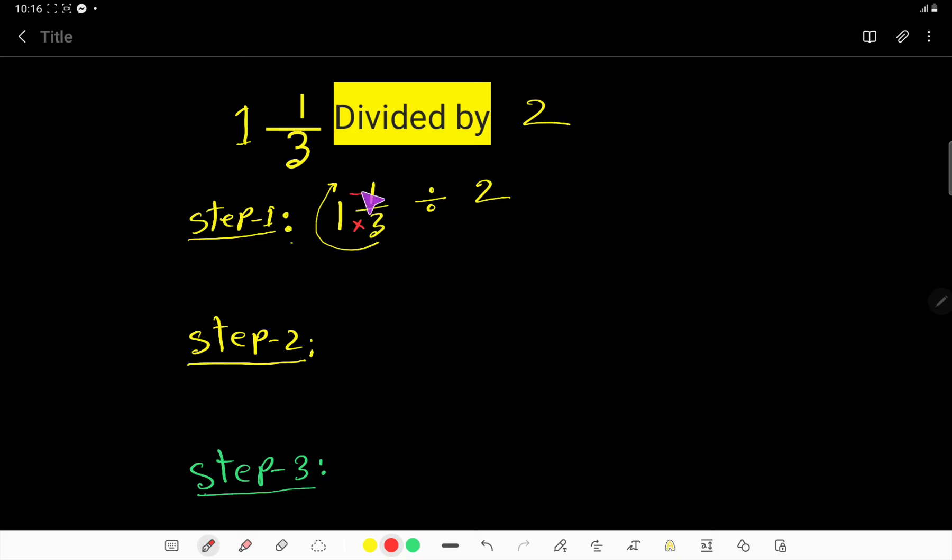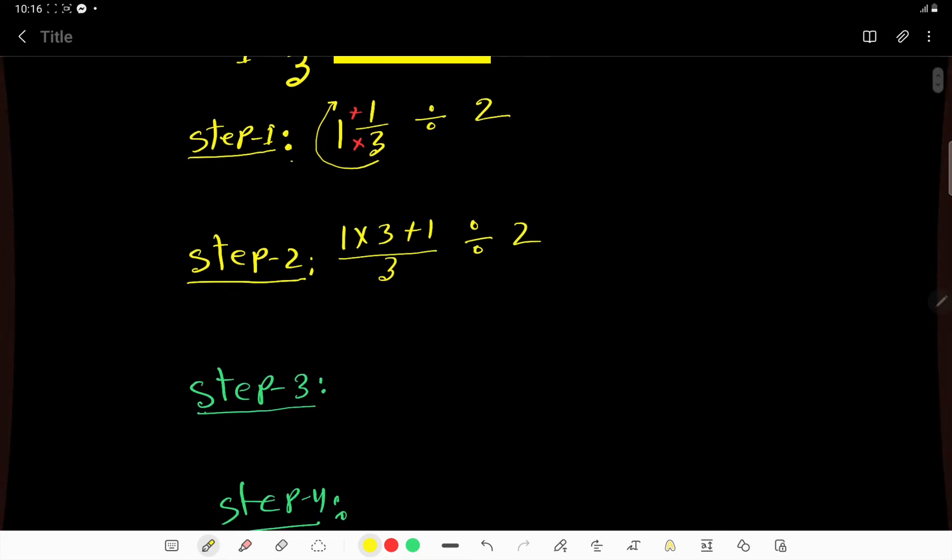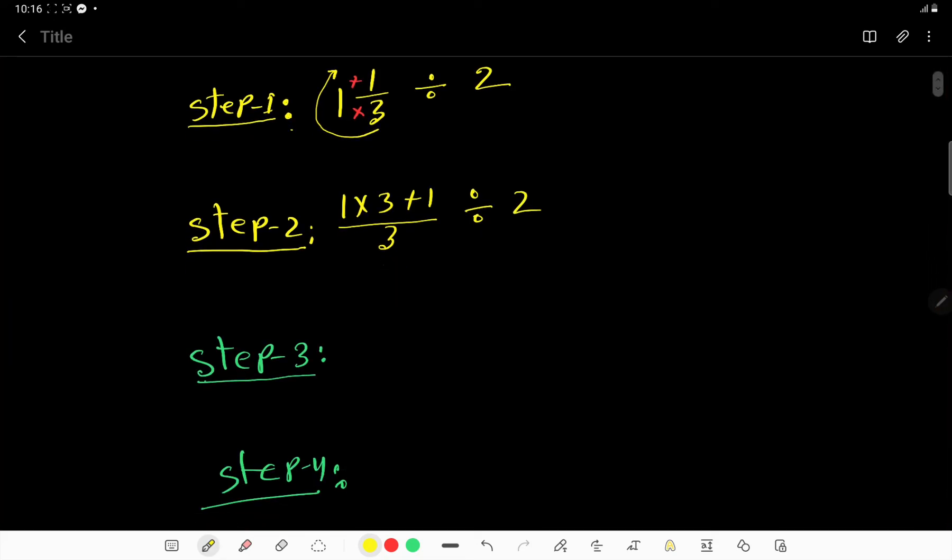That is, the bottom, and we have to add the numerator, that is the top. We multiply whole number times denominator, plus add the numerator, and we take the same denominator to convert this mixed number to improper fraction. Right, so look at the third step. What we are getting: